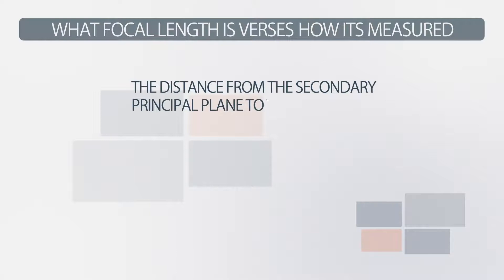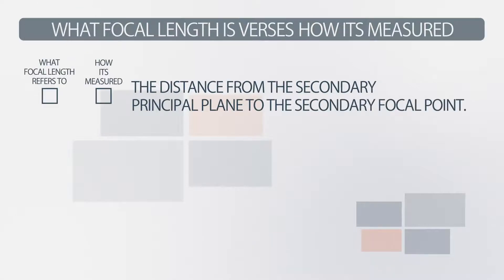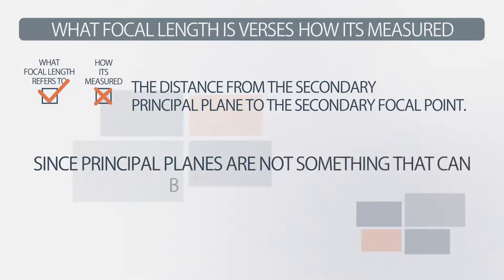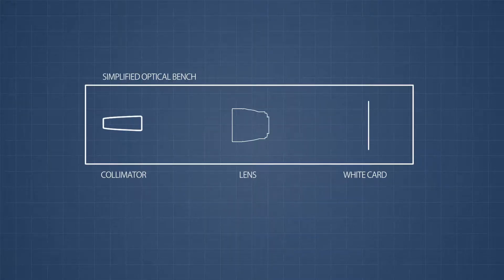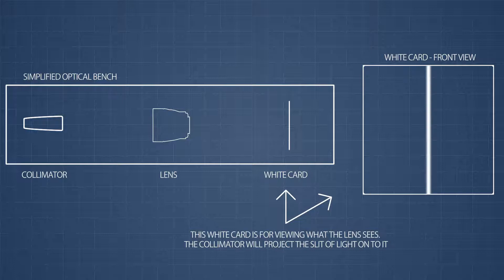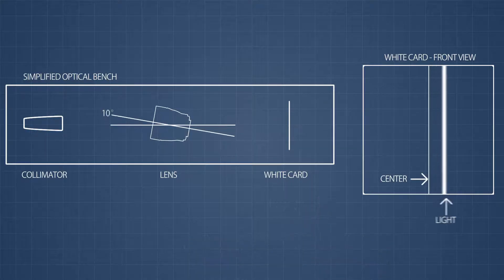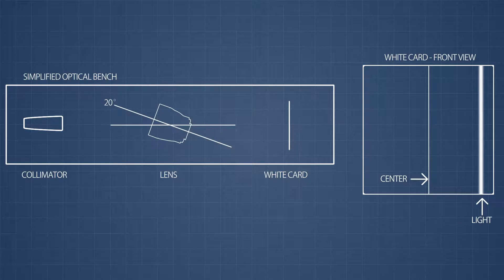But wait — if you have to know the focal length to find the principal plane, then how do you use the distance from the principal plane to the focal point to find the focal length? For the answer, I emailed Zeiss, which is a company that makes lenses. They told me that although this is what focal length refers to, it's not how it's measured, since principal planes are, as they said, not something that can be seen or touched. According to them, the focal length is measured by taking the quotient of the distance of an image point from the optical axis and the tangent of the field angle. Basically, they take a lens and put it onto something called an optical bench. The lens looks into a collimator — a device that creates parallel rays of light — and it sees a slit of light at an infinite distance. The lens is then rotated to different angles, causing the slit of light to be seen at different distances from the center, and they use these distances and angles to calculate the focal length.